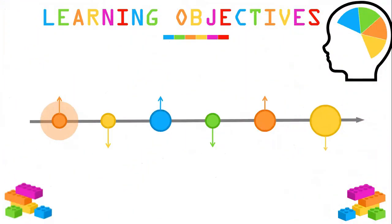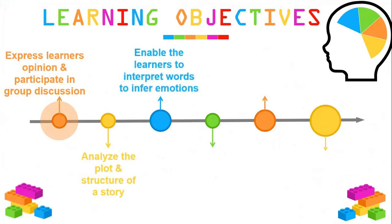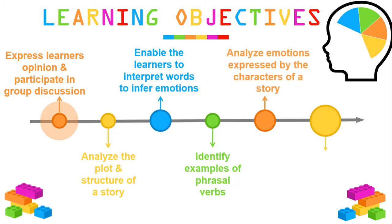Moving on to our learning objectives. Our first objective was to express learners' opinions and participate in group discussion. Second, analyze the plot and structure of a story. Third, enable learners to interpret words to infer emotions. Fourth, identify examples of phrasal verbs. Fifth, analyze emotions expressed by the characters. Last, enable learners to read a story and answer questions based on it.